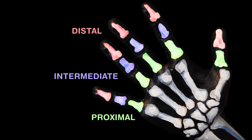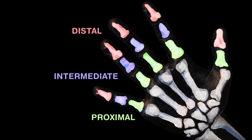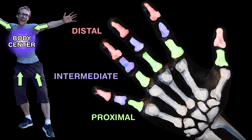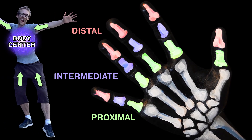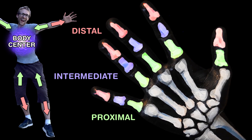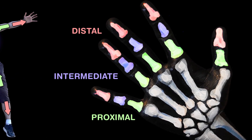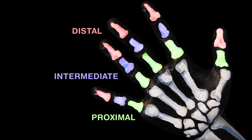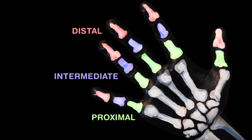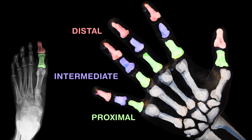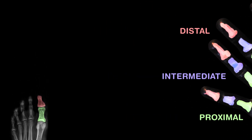distal phalanges can be seen. Those closest to the body are called the proximal, while the distal ones are at a distance maximal. There's no intermediate phalanx in your thumb though — in this it mirrors the structure of your big toe.